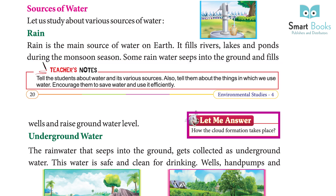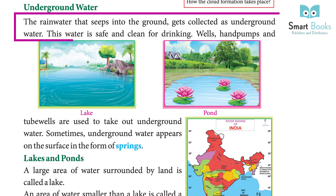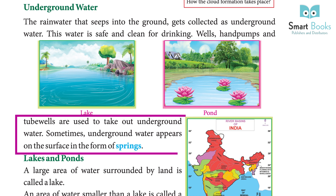Underground water: The rainwater that seeps into the ground gets collected as underground water. This water is safe and clean for drinking. Wells, hand pumps, and tube wells are used to take out underground water. Sometimes underground water appears on the surface in the form of springs.